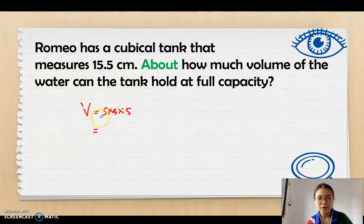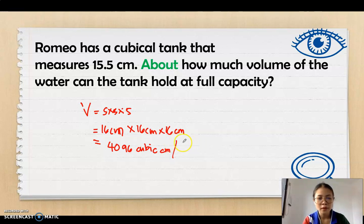Because the digit, the tenth's place value is greater than 5. So, it is 16 centimeters times 16 centimeters times 16 centimeters. Now, you will get 4096 cubic centimeters, or 4096 cm to the exponent of 3 cubic centimeters.